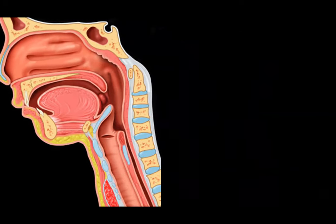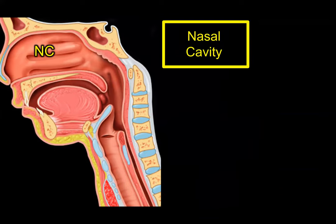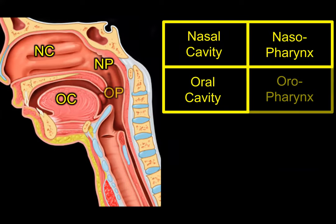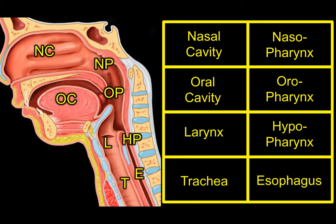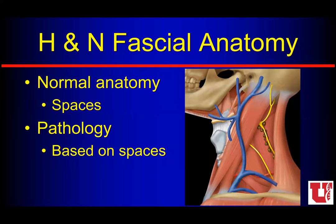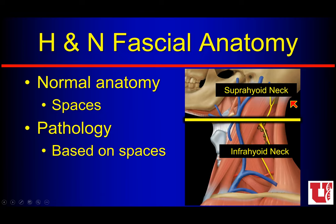So if we say a lesion is centered in the nasal cavity, the nasopharynx, the oral cavity, the oropharynx, the larynx, the hypopharynx, the trachea, or the esophagus — wherever we think that's centered in the upper digestive tract is very important for staging. When we think about all the soft tissues around the upper digestive tract, we can think about these spaces in the suprahyoid and infrahyoid neck. If I find that hyoid and draw lines straight across, that separates the suprahyoid and the infrahyoid neck.